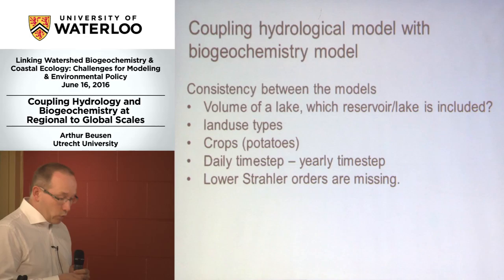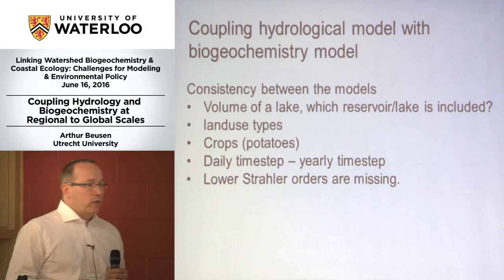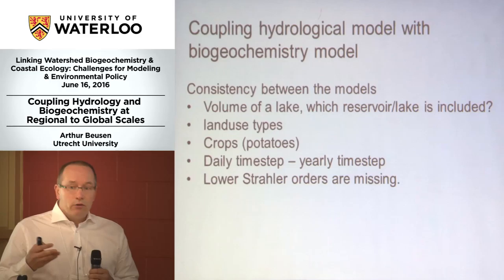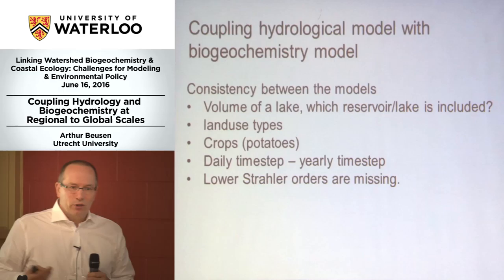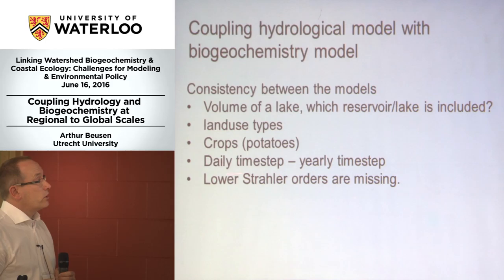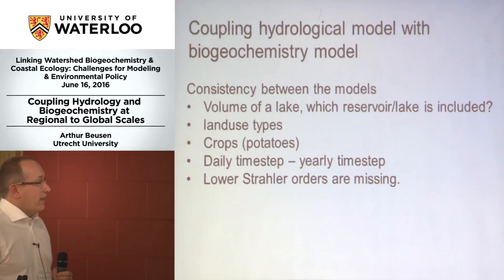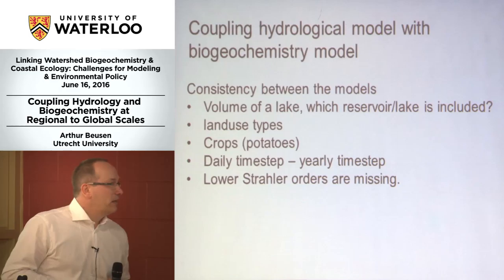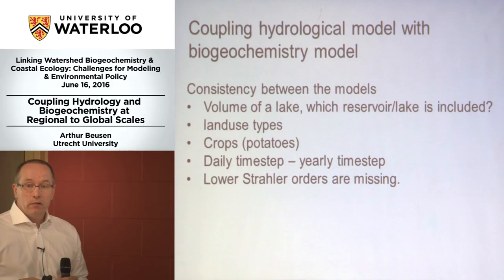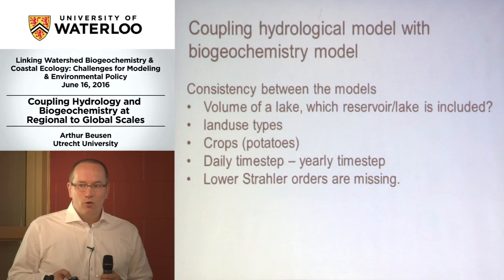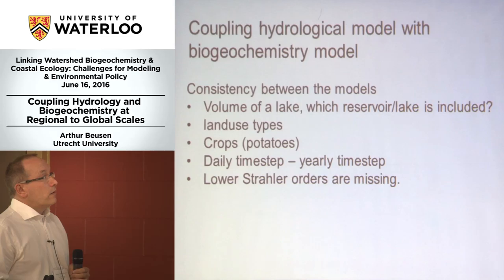The second issue is land use, because the hydrological and biogeochemistry models come from totally different histories with different basic assumptions. For example, hydrological models use tall vegetation versus short vegetation — I'm talking about crops. Most hydrological models calculate the evapotranspiration of the crops, but mostly they use something like potatoes. Time step is also a problem — daily versus yearly. And one of the things for Vincent, for example, is that the lower Strahler orders are missing. Global models start at Strahler order 6 or something, so what do you do with the lower Strahler orders?